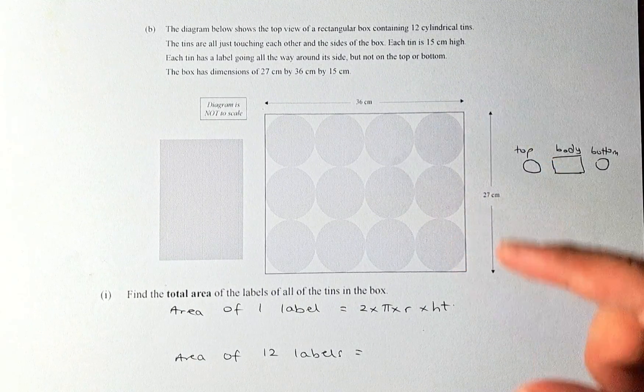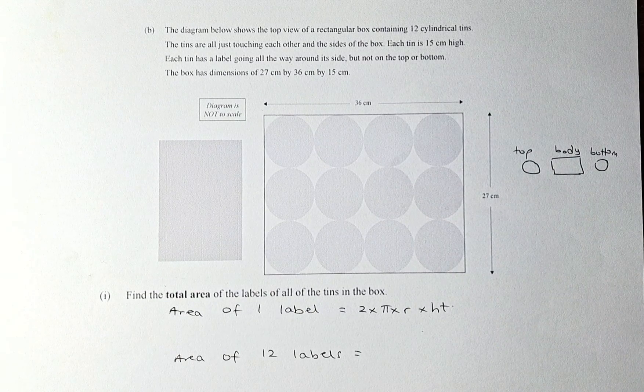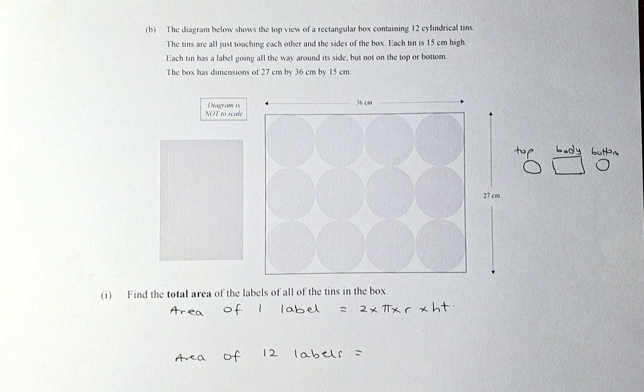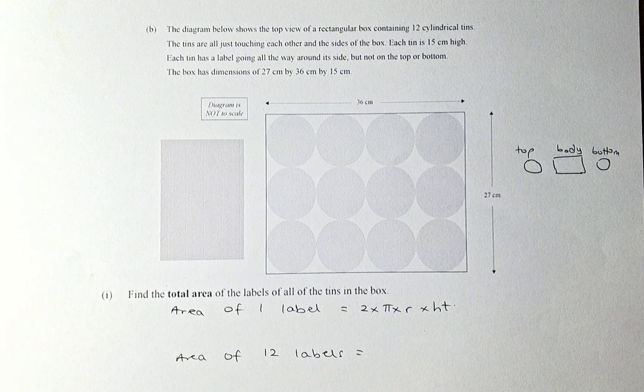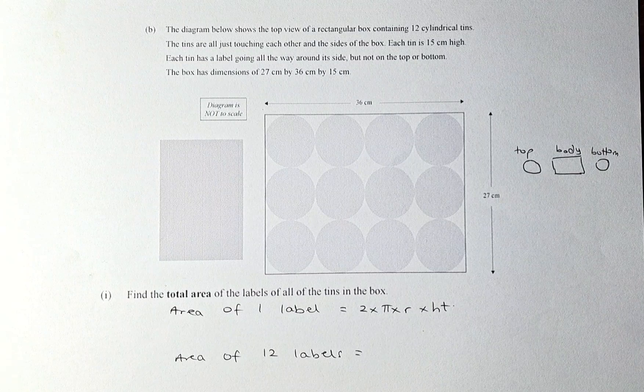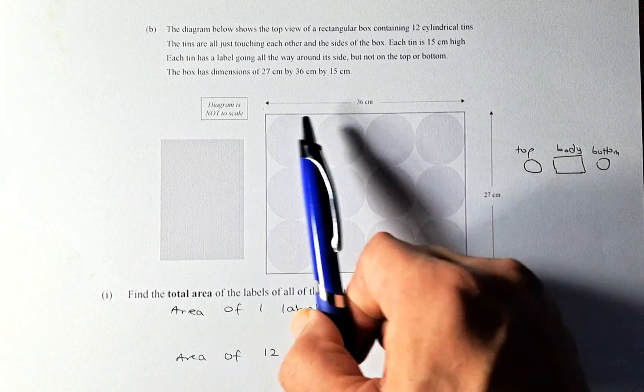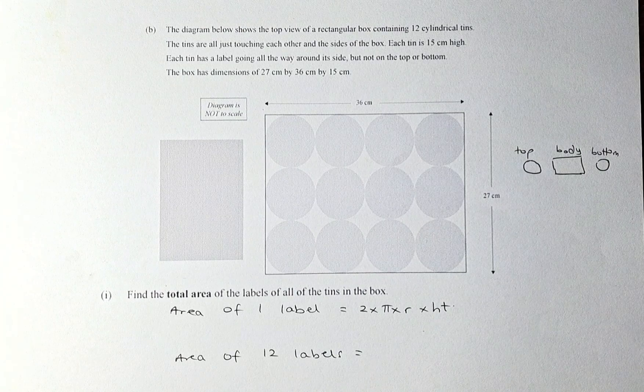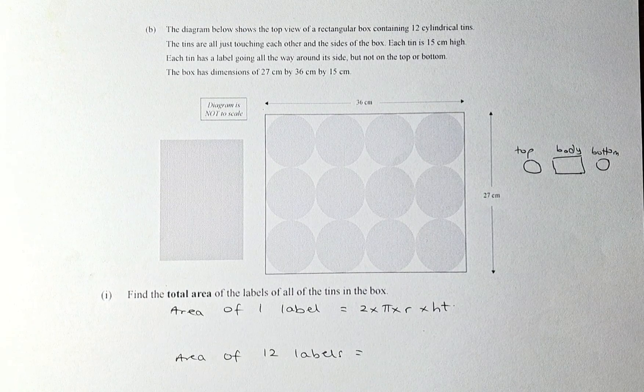Each tin is 15 centimeters high. Each tin has a label going around the side but not on the top or the bottom. The box has dimensions of 27 centimeters by 36 centimeters. So find the total area of the labels of all the tins in the box.